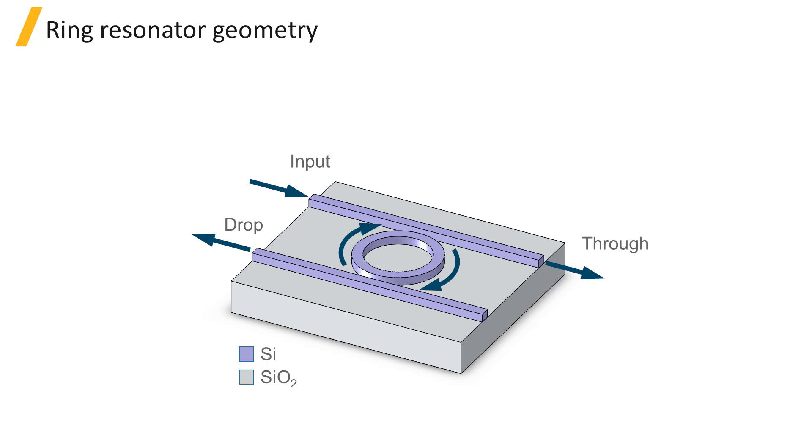Some of the light which enters from the straight waveguide at the top will couple into the ring and into the straight waveguide at the bottom, exiting through the drop port.